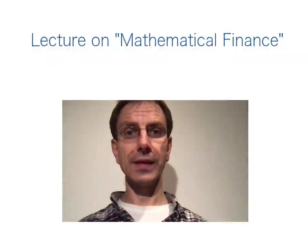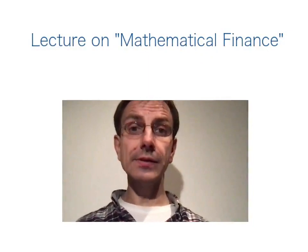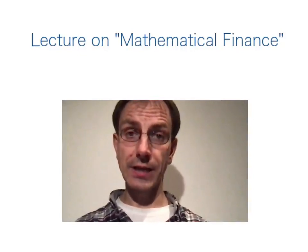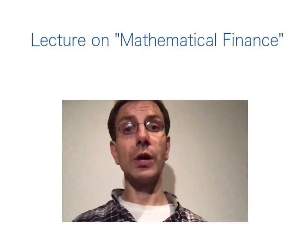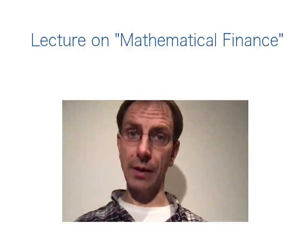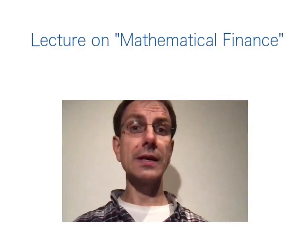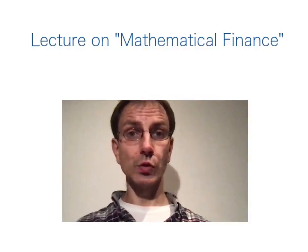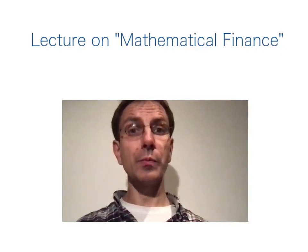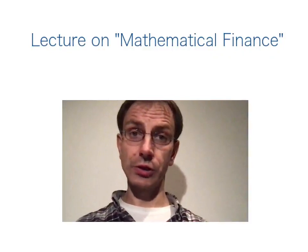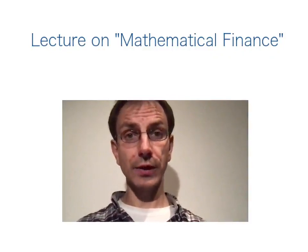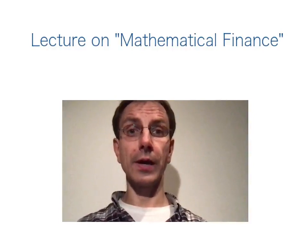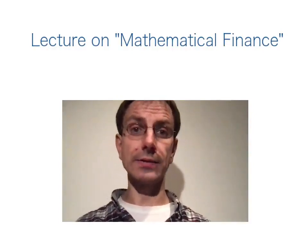Welcome to the lecture on mathematical finance. In this lecture, I would like to study in detail the so-called Cox-Ross-Rubinstein model, which was originally introduced in 1979. In particular, I would like to discuss in detail on which condition this model is arbitrage-free and whether or not that model gives rise to a complete market model. Once we have studied these two properties, I would like to focus next on pricing of European contingent claims, specifically the arbitrage-free price of European call and put options and of barrier options.